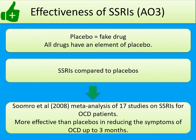For evaluation, let's first consider the effectiveness of SSRIs. Any licensed drug will have gone through extensive drug trials comparing the real drug to a placebo. In a meta-analysis of 17 studies on OCD patients, Soomro found SSRIs were more effective than placebos in reducing OCD symptoms for up to three months. This is a strength — the evidence suggests SSRIs are genuinely effective.